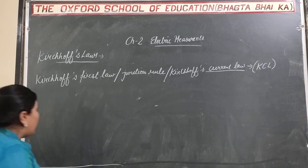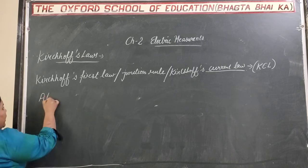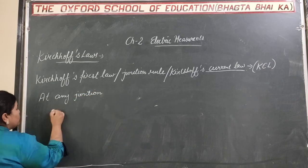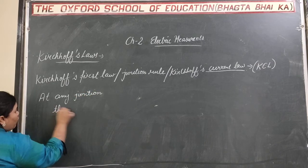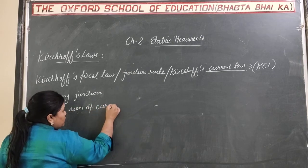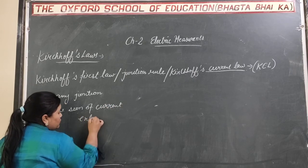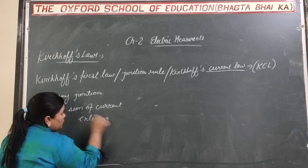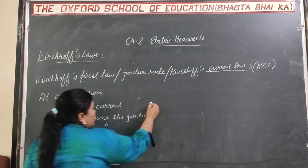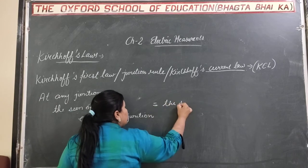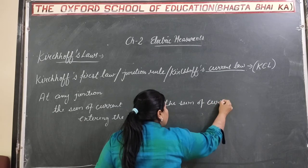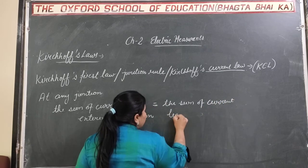According to this law, at any junction, the sum of current entering the junction is equal to the sum of current leaving the junction.